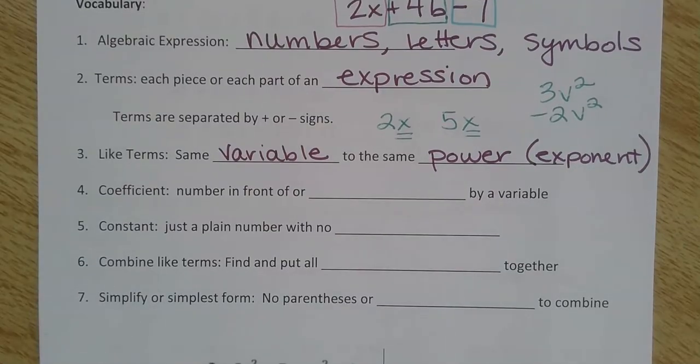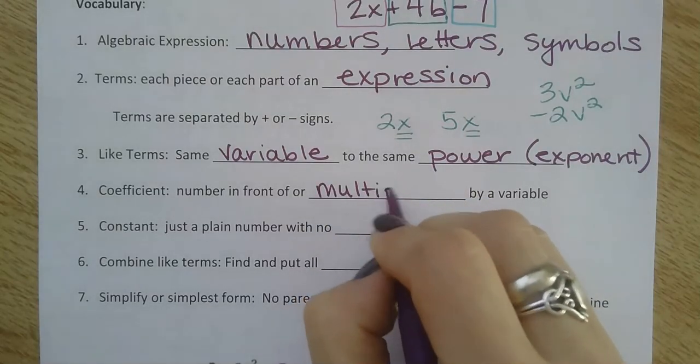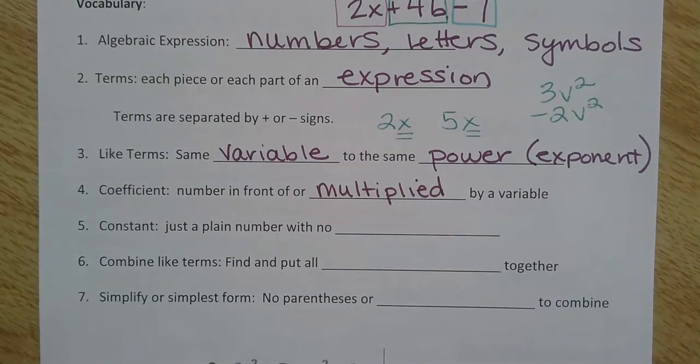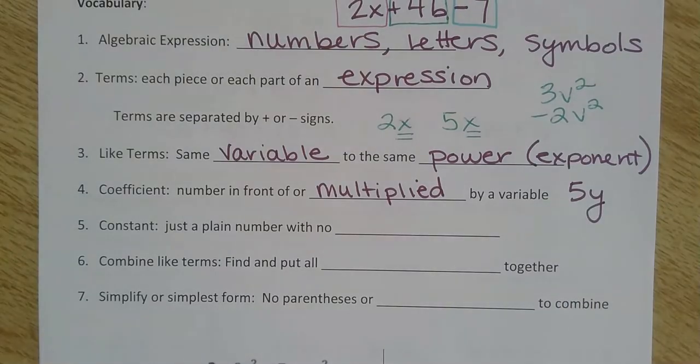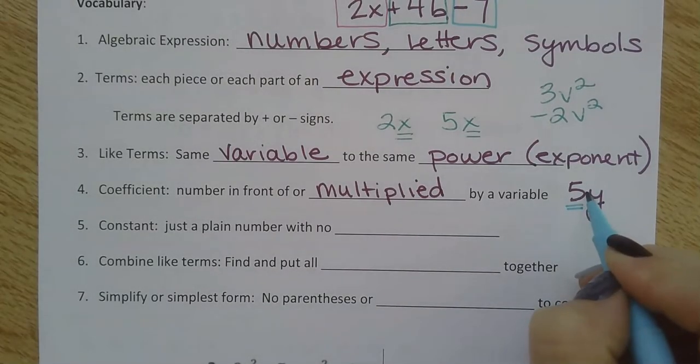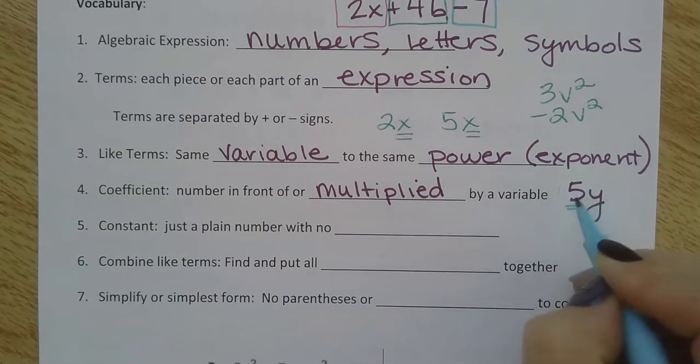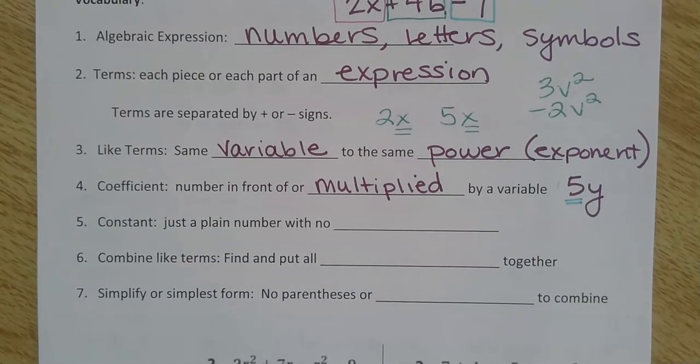Coefficient is just a number in front of or multiplied by a variable. For example, if I have 5y, 5 is the coefficient. That means I'm doing 5 times y. So whatever number is in front of a variable, which is being multiplied by that variable, that's a coefficient.